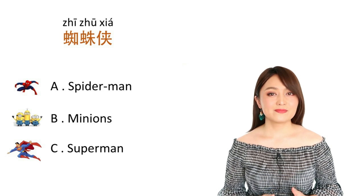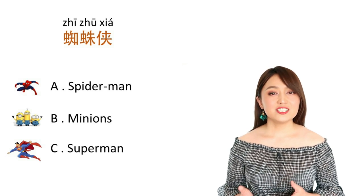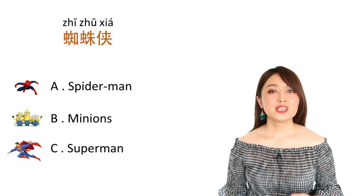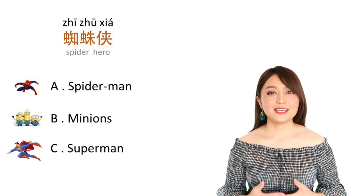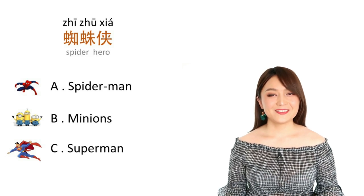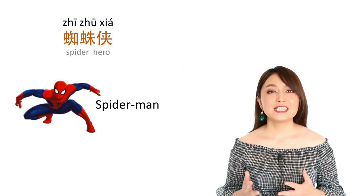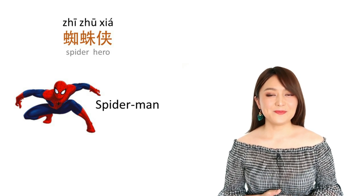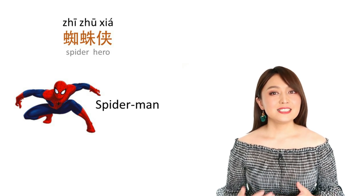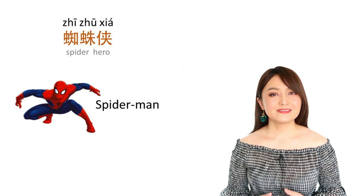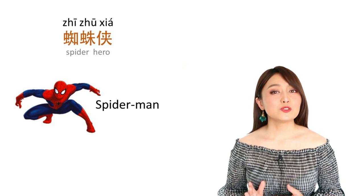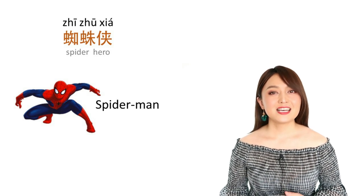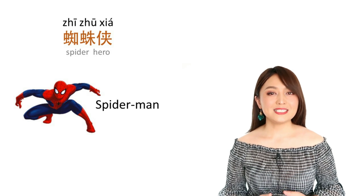好，下一个，蜘蛛侠。 A hint: 蜘蛛 is spider. 对，that is Spider-Man. 侠 here means hero. So 蜘蛛侠 — Spider-Man.